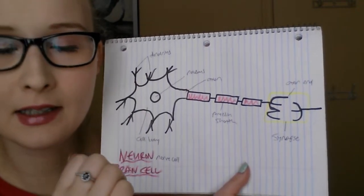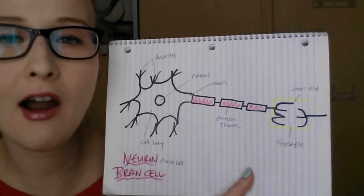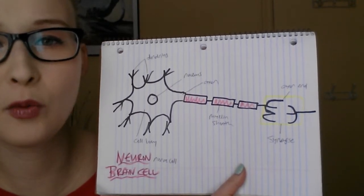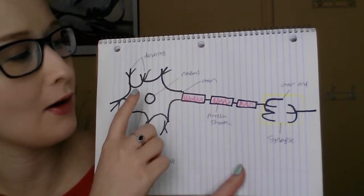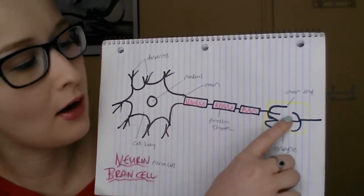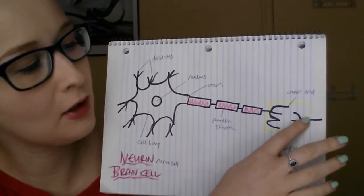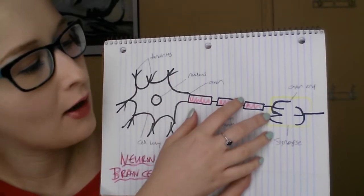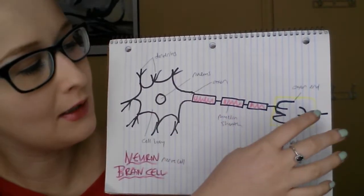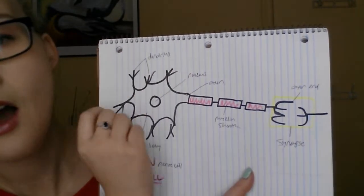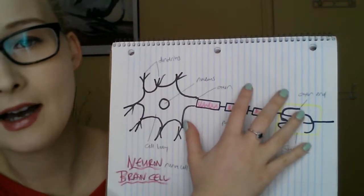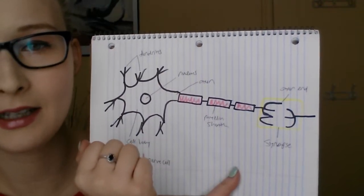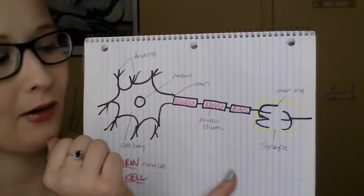Conductivity is essential — it's related to ion channels and electricity, and it's the actual way cells communicate with each other. At the end of the axon you have a synapse, where the axon interacts with the dendrites of the next cell. They line up and form a connection, communicating with each other.